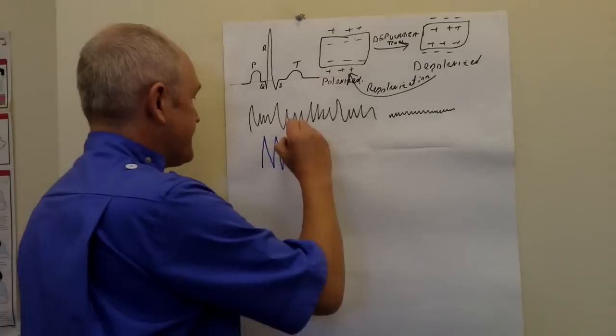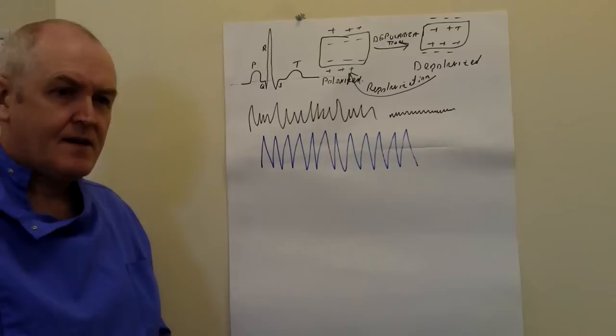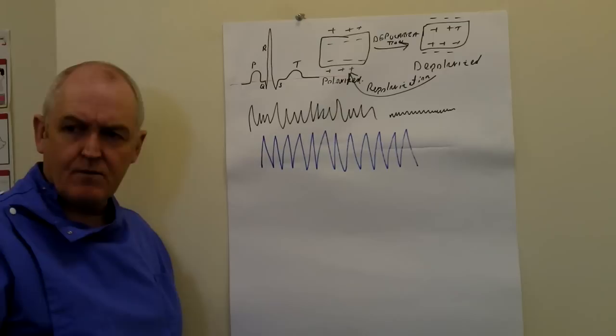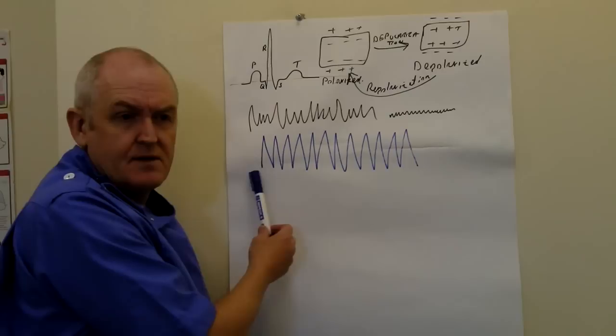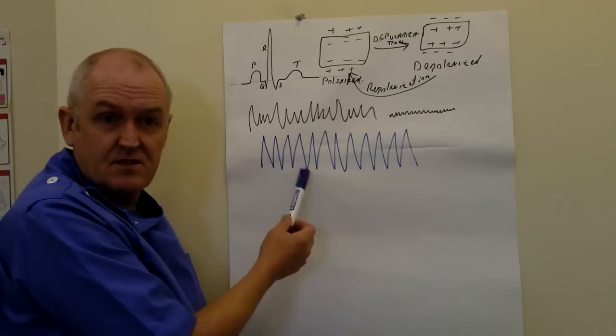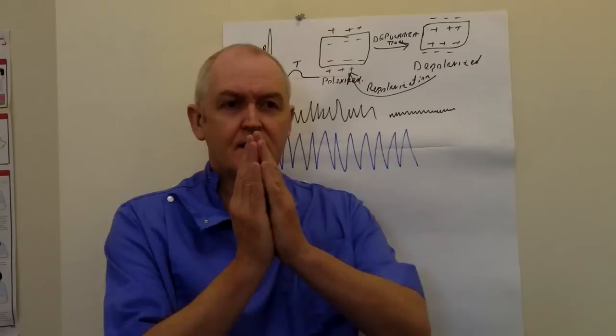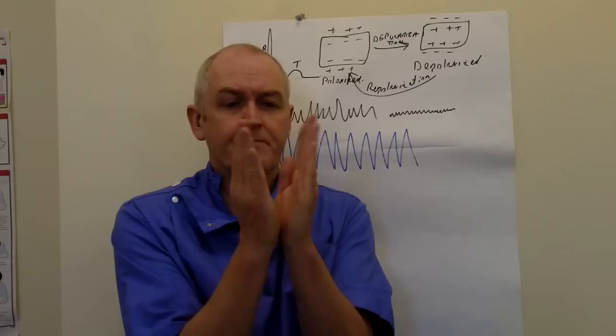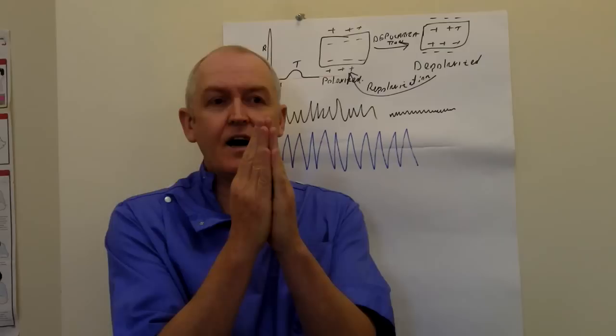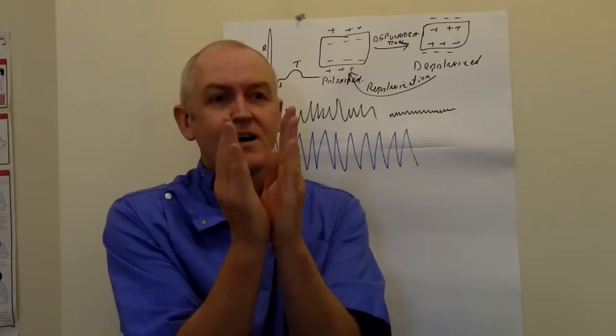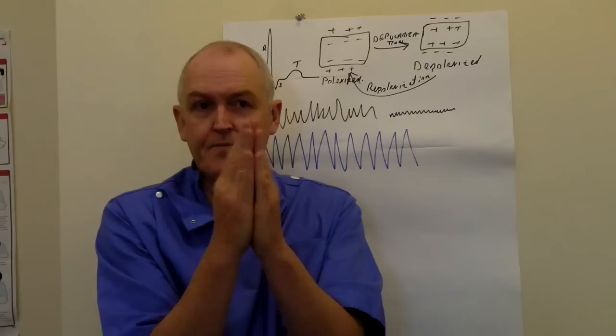Ventricular tachycardia sometimes causes the patient to be unconscious; other times they might not be. This responds superbly to defibrillation, but you've got to make sure the patient's unconscious first — it's not very nice getting 2,000 or 3,000 volts through your chest when you're awake. In ventricular tachycardia there's no time for the ventricles to fill up, so there's very little cardiac output — the patient might have a blood pressure of around 30.